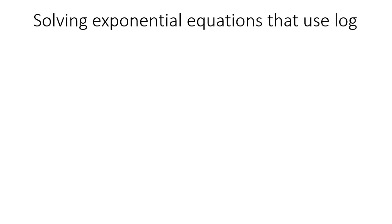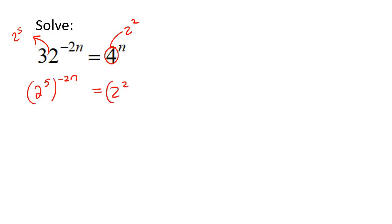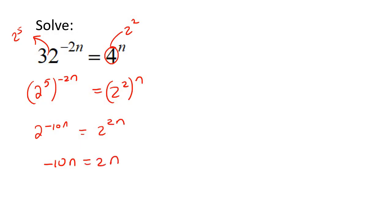In the previous lesson, we went over solving exponential equations that did not use logs. For example, we did a question where both numbers have to become the same base. We could change one to 2 to the power of 2, and the other to 2 to the power of 5. You then use exponent rules to multiply, the 2s are the same so you ignore them, take all the n's to one side, and you'd end up with n equals 0. That was the easy type of exponential where the numbers can become the same.